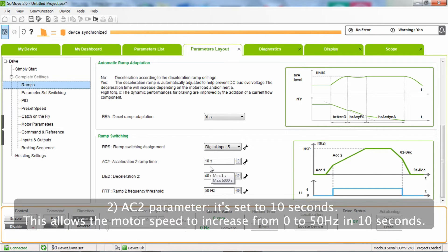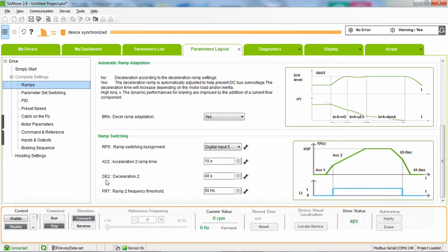Number 2: AC2 parameter. It's set to 10 seconds. This allows the motor speed to increase from zero to 50 hertz in 10 seconds.